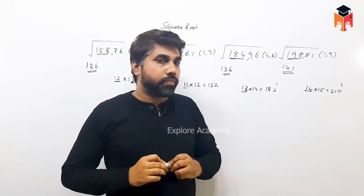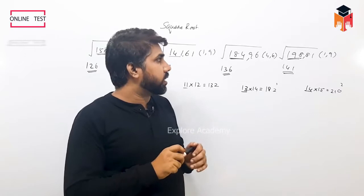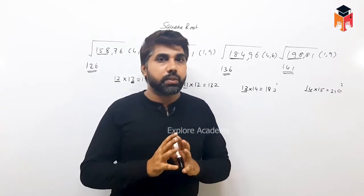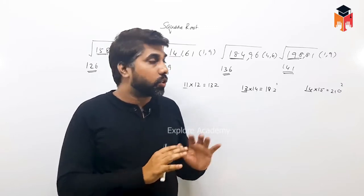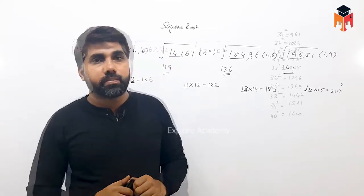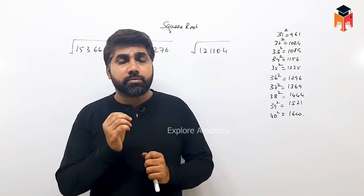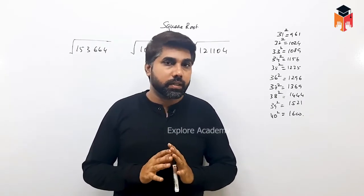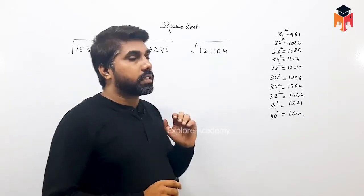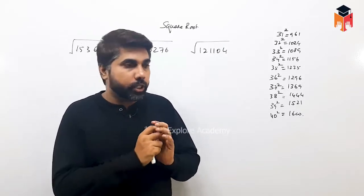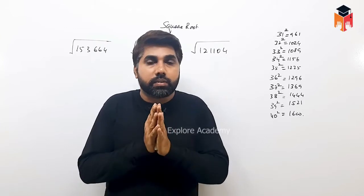Students, for a 5-digit square root you will find a 3-number answer. For a 6-digit square root, you will find 3 digits. If you check this video, you will find answers for 3-digit, 4-digit, 5-digit, and up to 6-digit numbers.